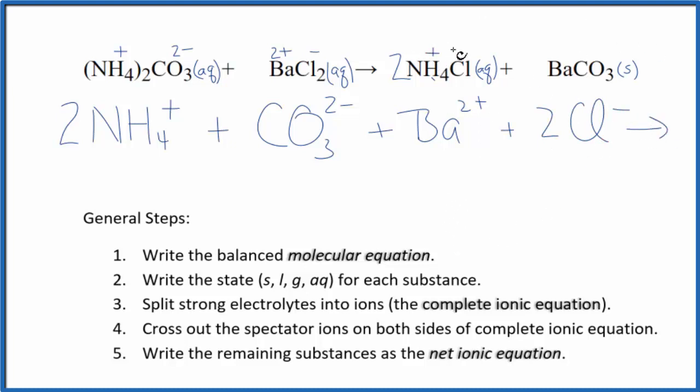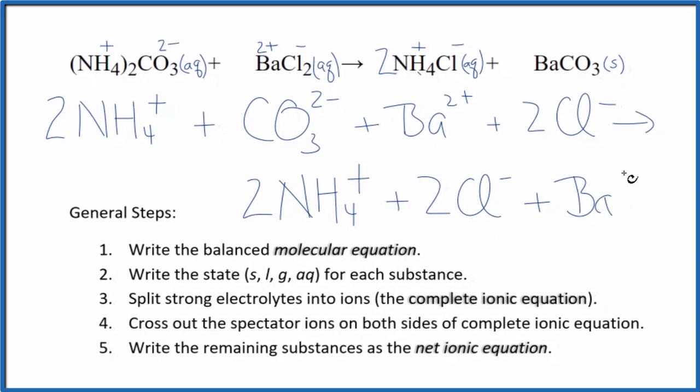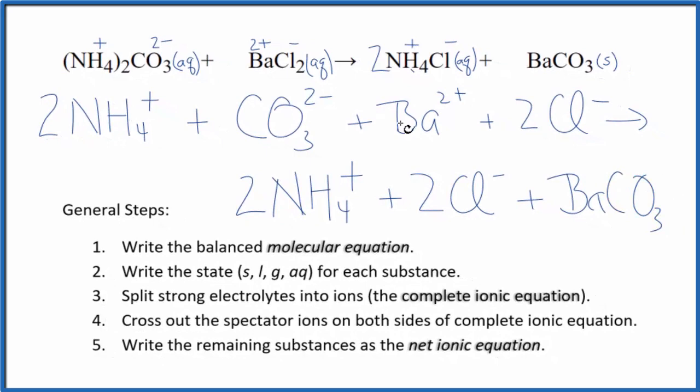For the products, we have the plus and the minus. So we have two ammonium ions, just like in the reactants. And then we have two chloride ions. And then for net ionic equations, we don't split solids apart. So we're just going to have BaCO3. And this is the complete or total ionic equation.